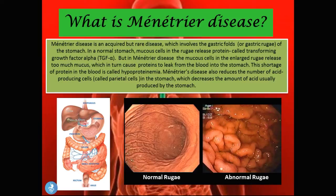In a normal stomach, mucous cells in the rugae release a protein called transforming growth factor alpha, or TGF-alpha. But in Ménétrier's disease, the mucous cells in the enlarged rugae release too much mucus, which in turn causes proteins to leak from the blood into the stomach. This shortage of protein in the blood is called hypoproteinemia. Ménétrier's disease also reduces the number of acid-producing cells, called parietal cells, in the stomach, which decreases the amount of acid usually produced.